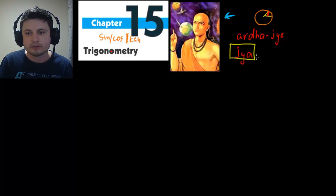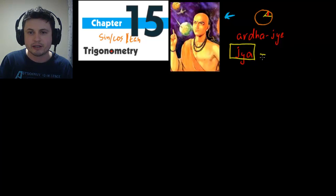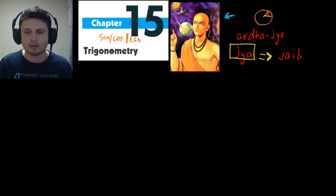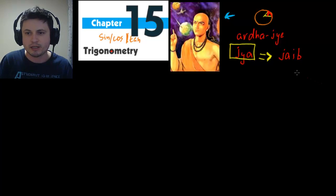A few hundred years later, Arab mathematicians took a look at his studies and translated them. In the process, the meaning and pronunciation changed to the word 'Jaib,' which in Arabic means a bay, a cove, or something curved like that — like a bay of water. It stayed as 'Jaib' for quite a few hundred years.